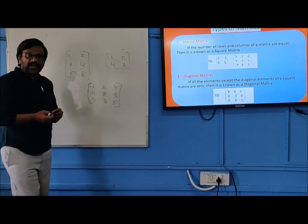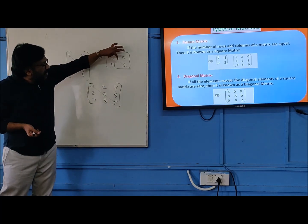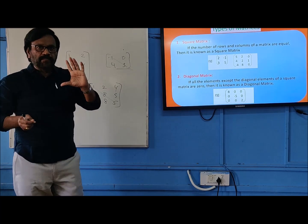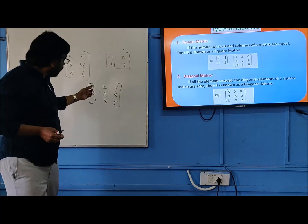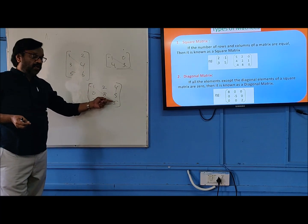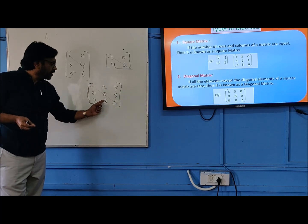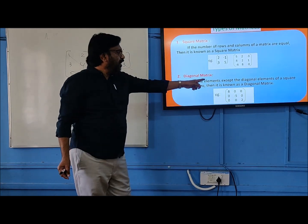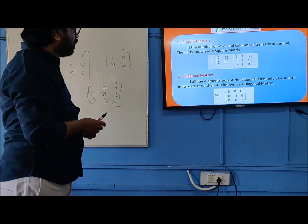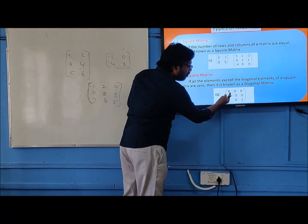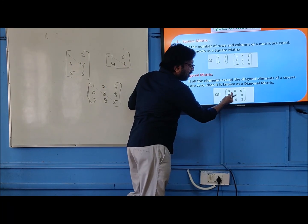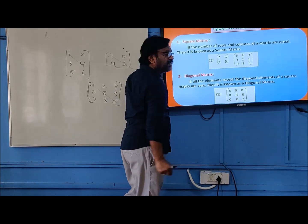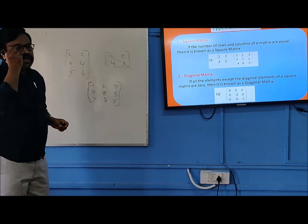What are the diagonal elements here? The diagonal is: minus 1, 8, 5. So if in a square matrix all the elements except the diagonal elements are zero, it is called a diagonal matrix. If all elements except the diagonal elements of a square matrix are zero, it is known as a diagonal matrix. For example, a matrix with minus y and 2 on the diagonal and all other elements zero — such a matrix is a diagonal matrix.